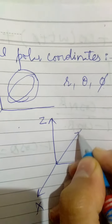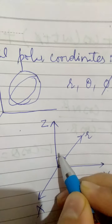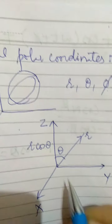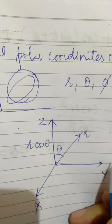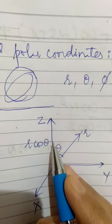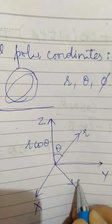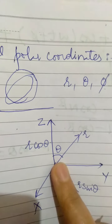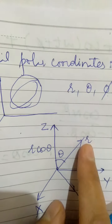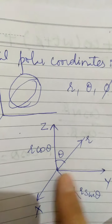Suppose r is the position vector of the particle moving on the surface of a sphere, and this r vector makes an angle theta with the vertical. Then the component along z is r cos theta. The component along the other axes is r sin theta. Since the entire xy plane is perpendicular to z, the r sin theta component can be shown conveniently in the xy plane and not just along y.